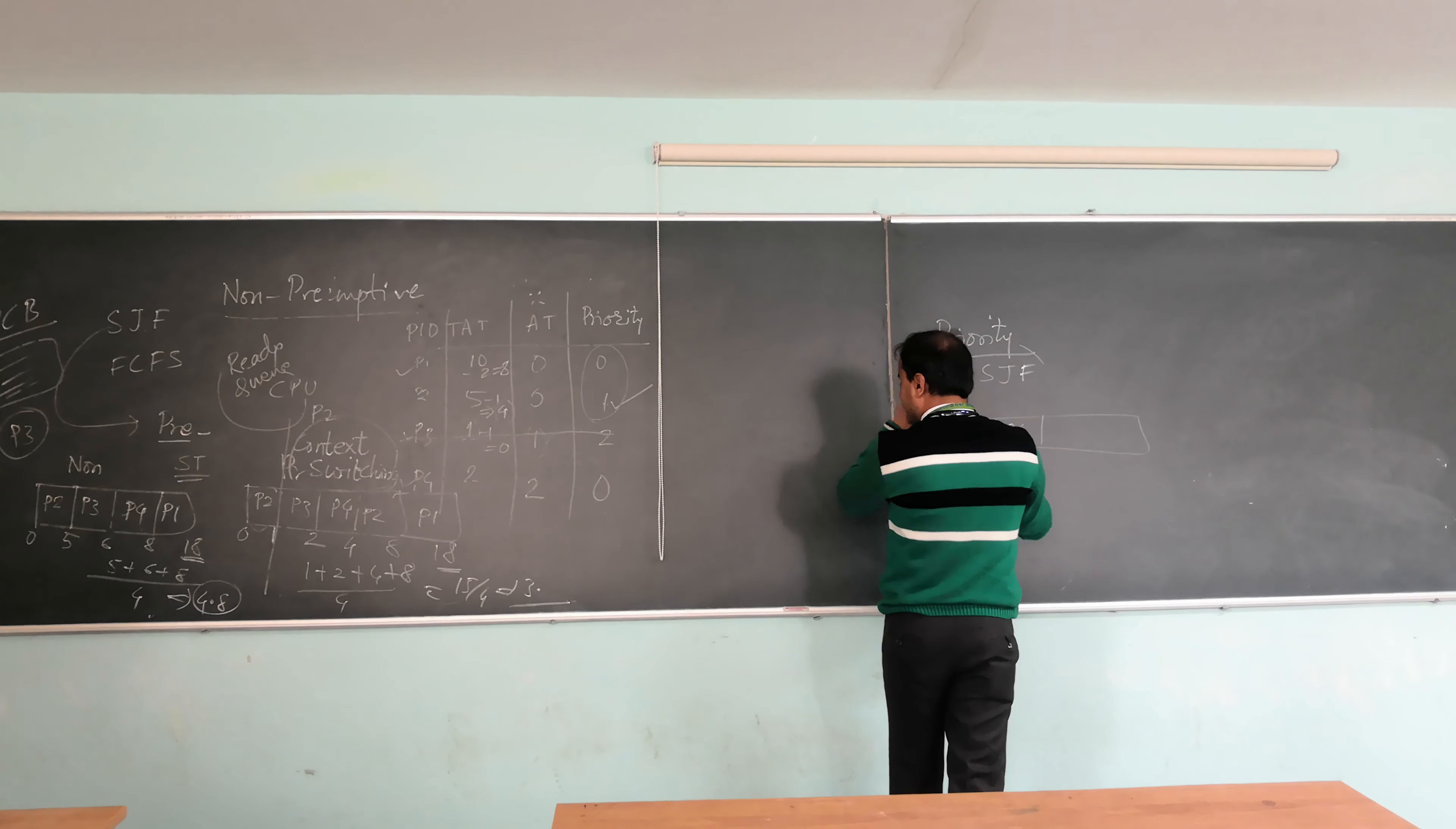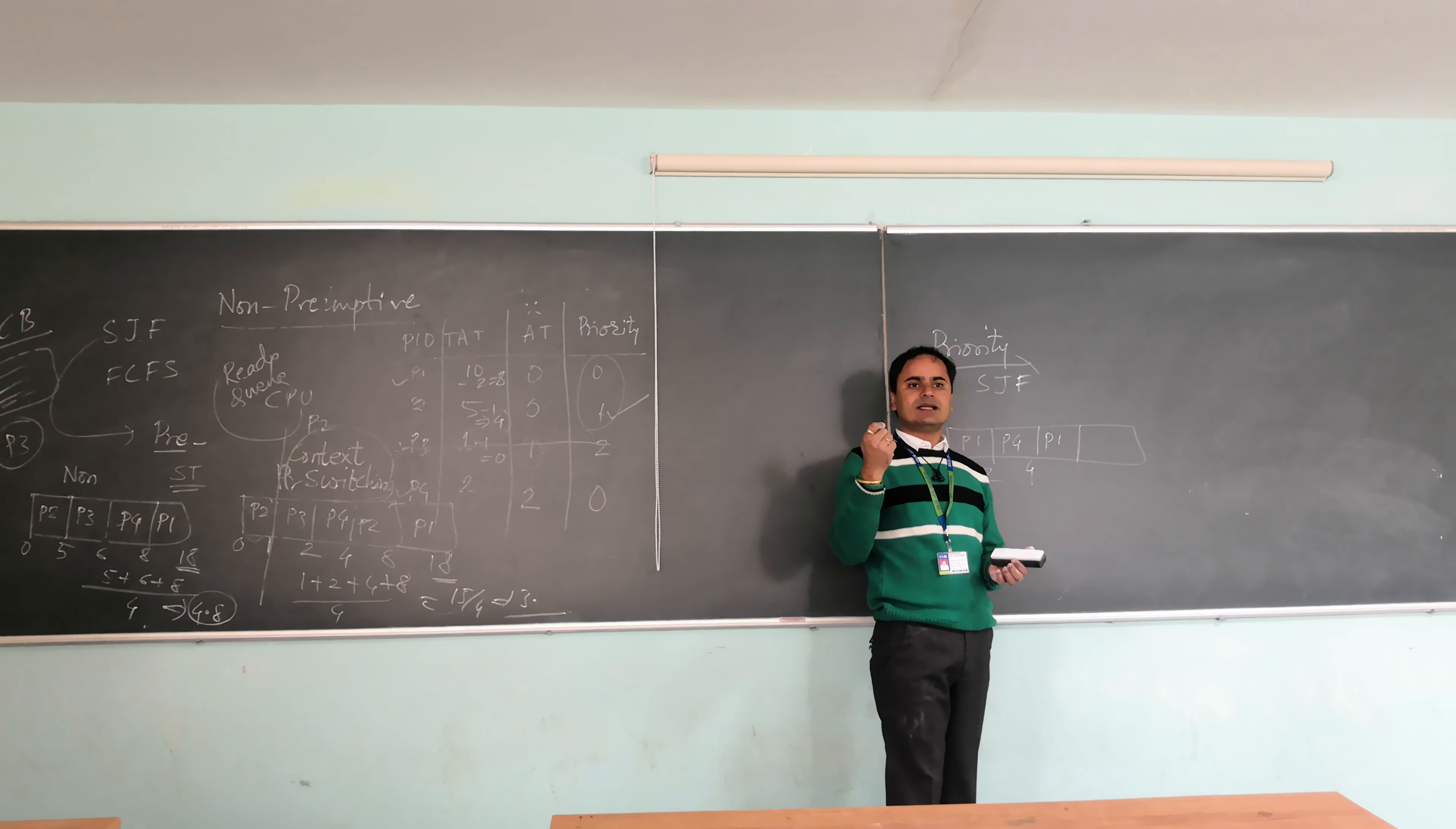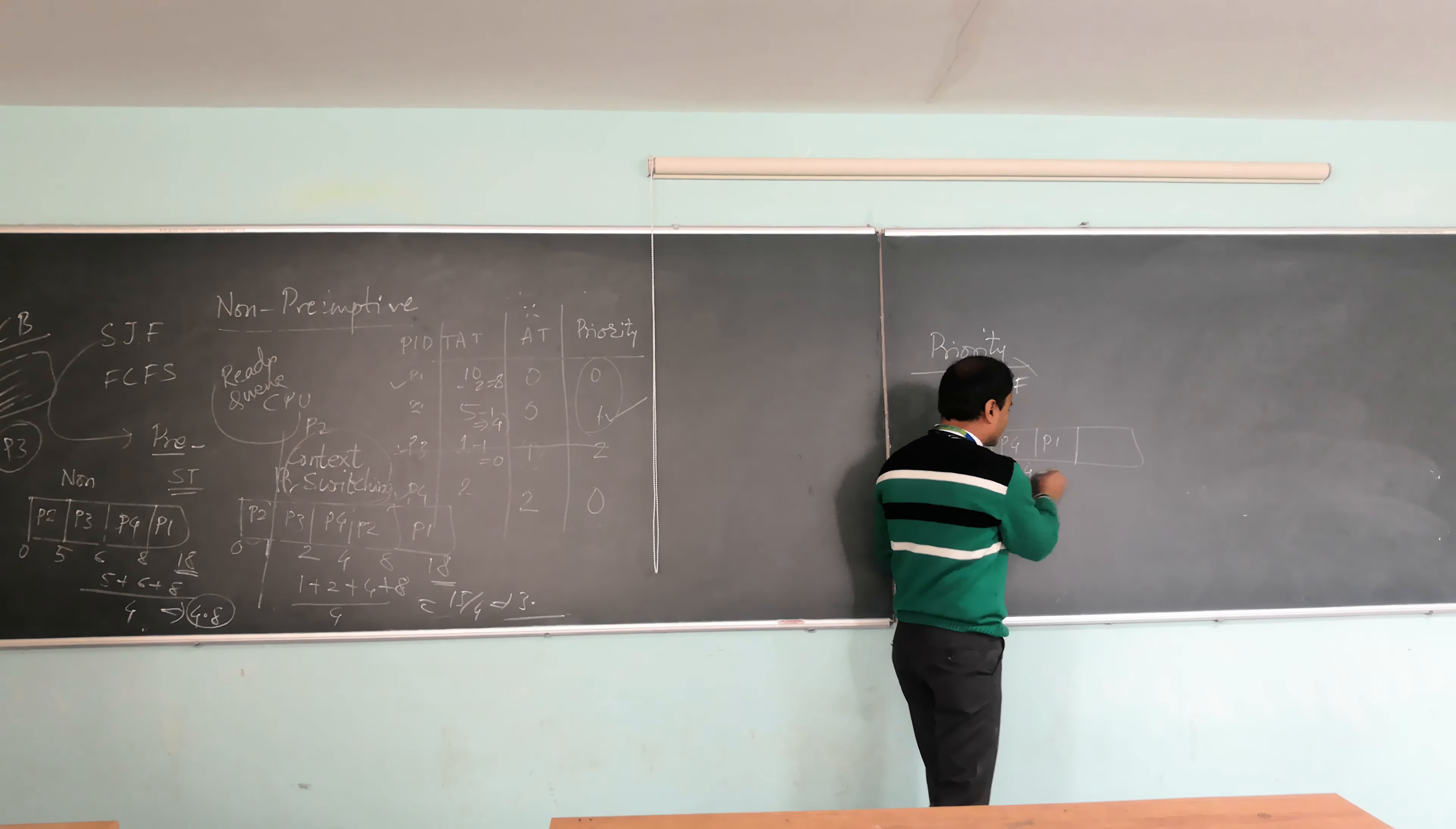P4 when will execute. It will not be then P1, it will be P1 time. Why? Because the low priority job out of P1, P3, and sorry P1, P2, and P3, low priority job is P1. So it will be the execution.